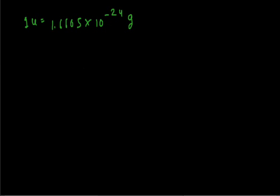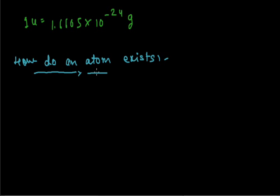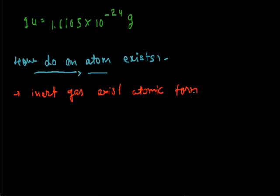The next topic is: how does an atom exist? We know that an atom is the smallest particle of a substance and it cannot exist freely. There are some exceptions like inert gases, which exist freely in atomic form. But other than inert gases, atoms are not stable in atomic form. To become stable, there should be a complete octet of their valence electrons.